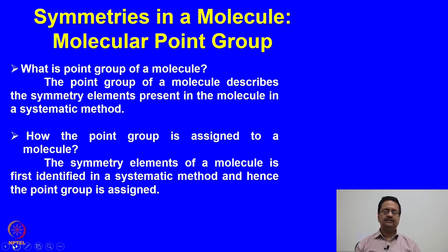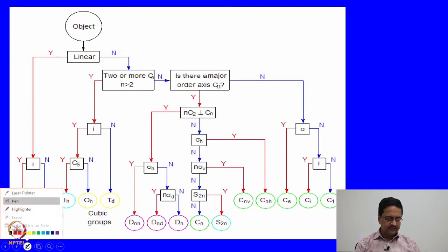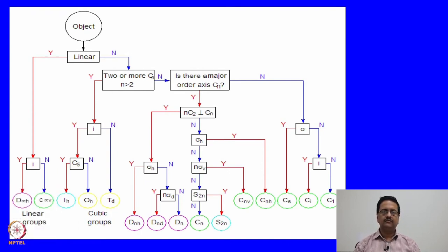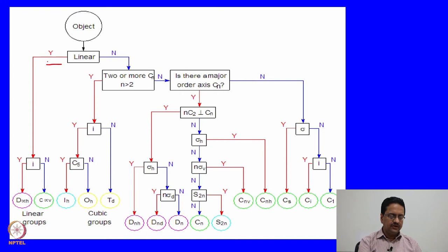We can understand this using a very elaborated flow chart which is shown here. What you can see is a flow chart where all possible symmetry elements and the classes of point groups are identified. When we get an object, we should start asking questions about the symmetries present in the object. When you look at one object, the first question one asks is whether the molecule is a linear molecule or a non-linear molecule. If the molecule is linear, we move towards the left. If the molecule is non-linear, we move along the right.